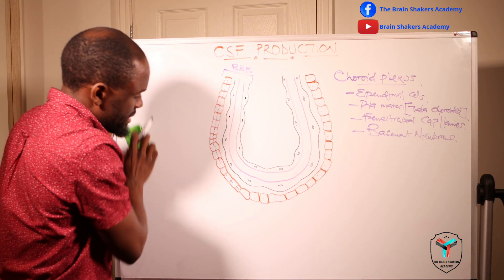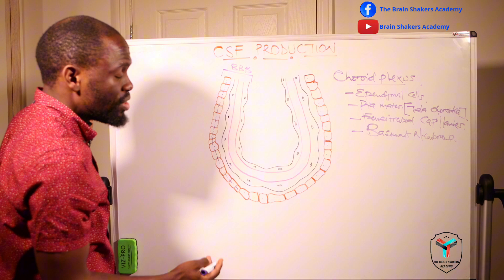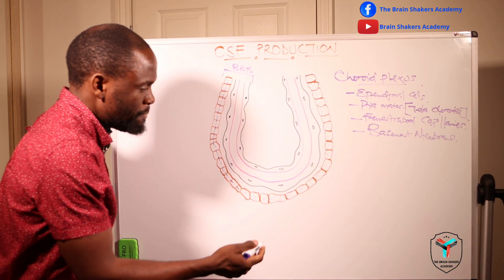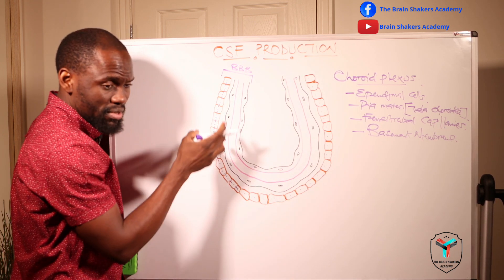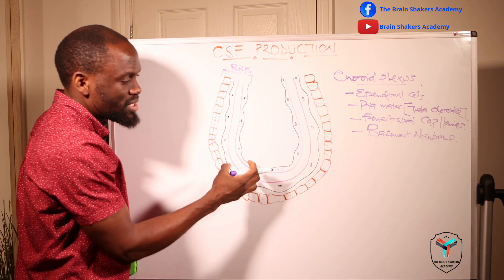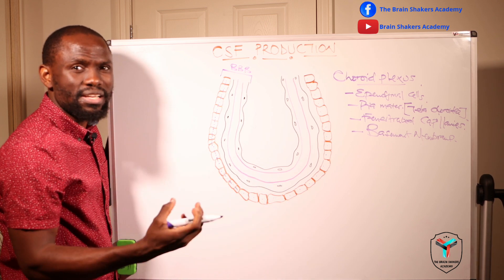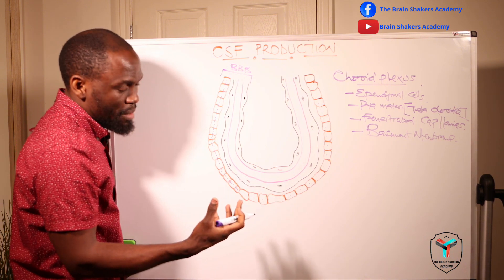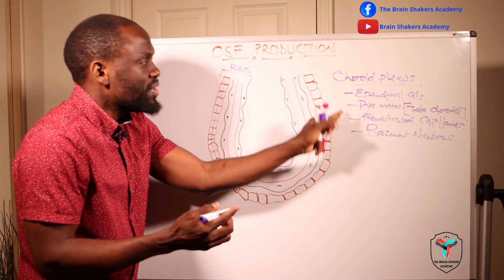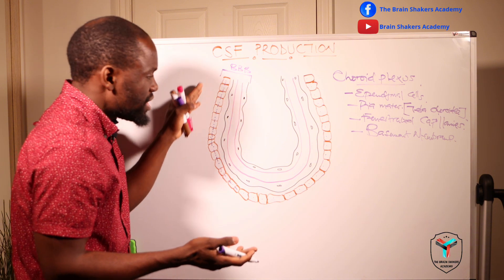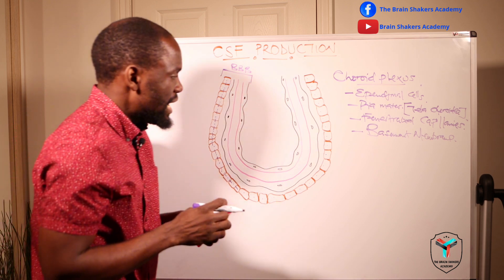What happens is that a filtrate comes from these fenestrated blood vessels, carrying a composition of ions, electrolytes, oxygen, and other elements important for CSF formation, into the ependymal cells. The ependymal cells get enough chemical elements from these fenestrated blood vessels to form the CSF. So the CSF is not just an ultrafiltrate of blood — it has the correct composition because of the specialized ependymal cells, also referred to as choroid cells, which play a key role in its production.